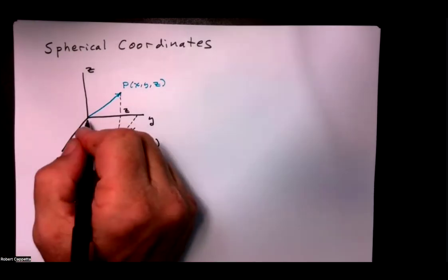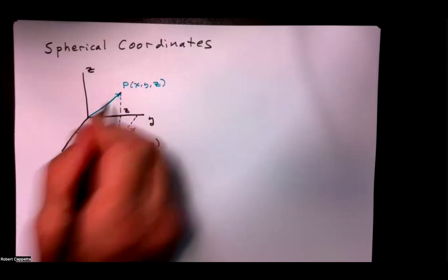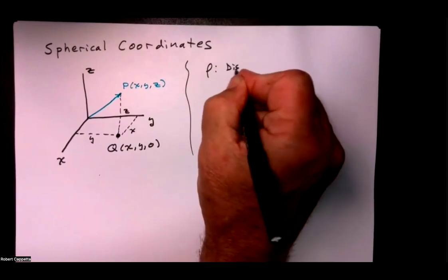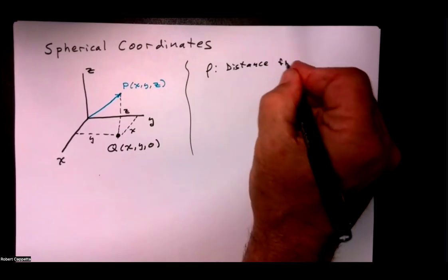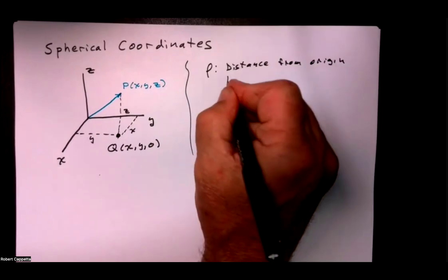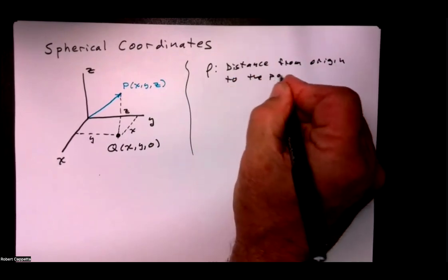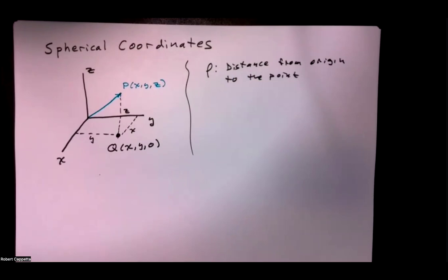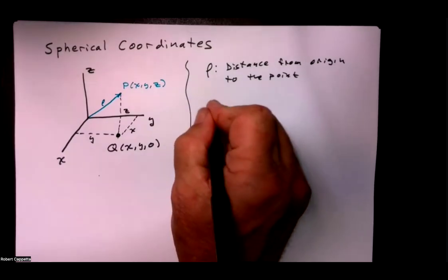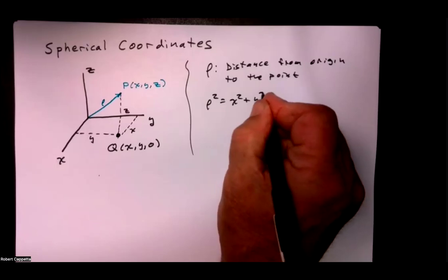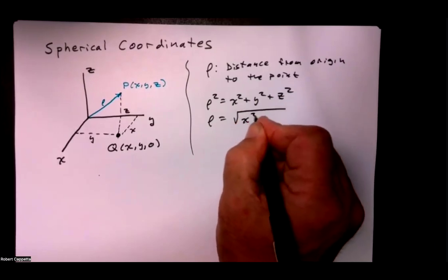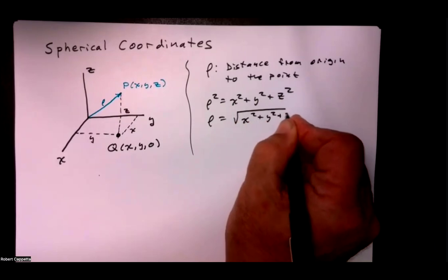Now what is the distance from the origin to that point P? That defines our coordinate called rho. Rho is the distance in three dimensions from the origin to the point. We can see from Pythagoras that x squared plus y squared plus z squared equals rho squared. So rho is the square root of x squared plus y squared plus z squared.